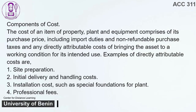Components of Cost. The cost of an item of property, plant, and equipment comprises its purchase price, including import duties and non-refundable purchase taxes, and any directly attributable costs of bringing the asset to a working condition for its intended use. Examples of directly attributable costs are: 1. Site preparation. 2. Initial delivery and handling costs. 3. Installation cost, such as special foundations for plants. 4. Professional fees.